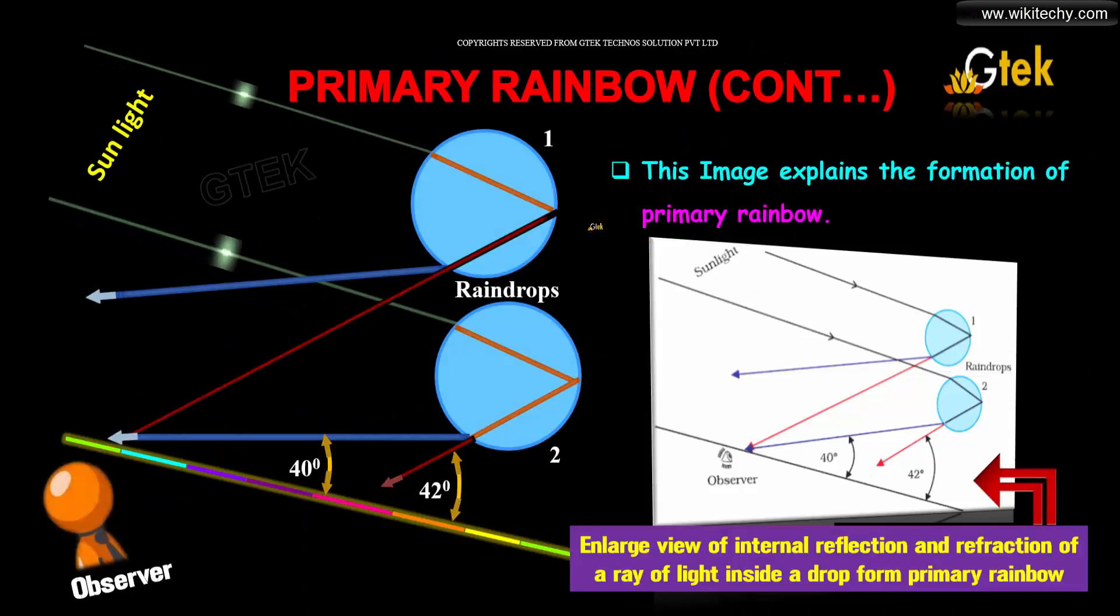This image explains the formation of primary rainbow. You can see the sunlight is passing, it is refracted, getting reflected, and refraction is happening here.